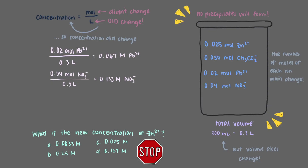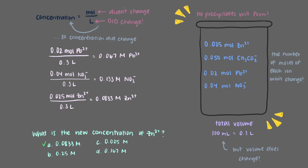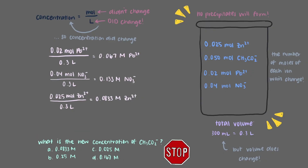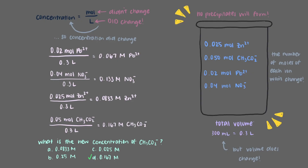We have 0.025 moles of zinc ions, and the new volume is 0.3 liters, so dividing gives a new zinc ion concentration of 0.0833 molar. For acetate ions, we divide 0.05 moles by 0.3 liters to get a new acetate concentration of 0.167 molar.